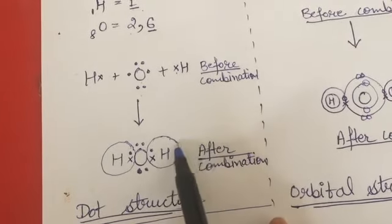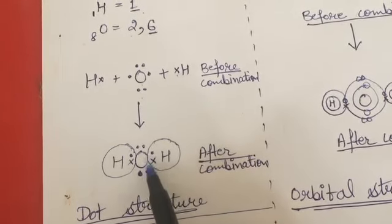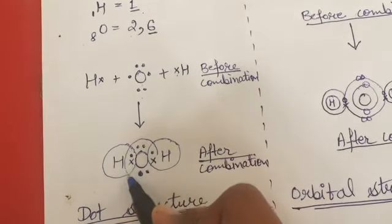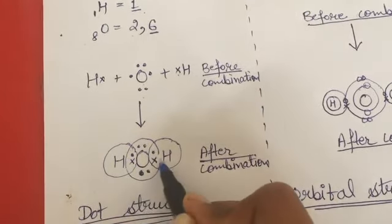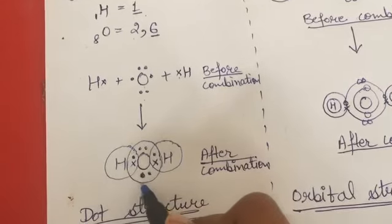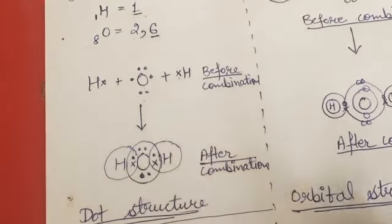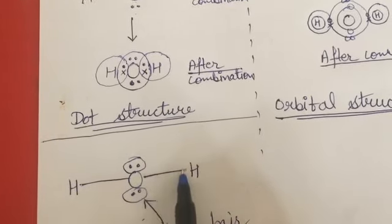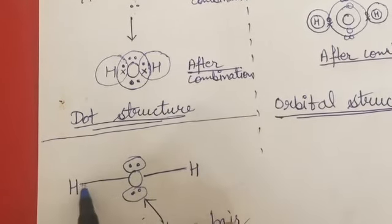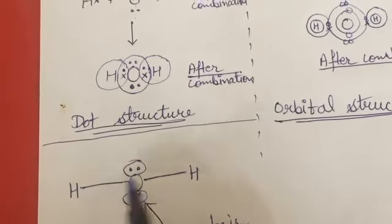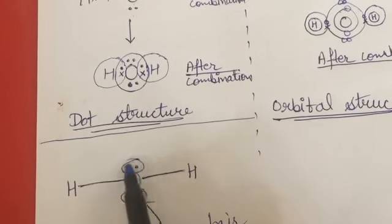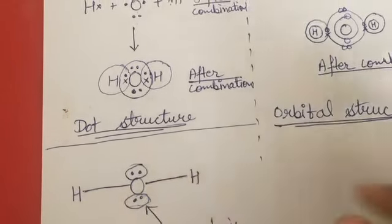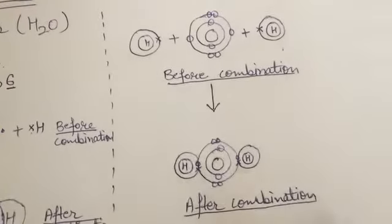Hydrogen's duplet is completed and oxygen's octet is completed, so they are both now stable by sharing of electrons. In this structure, the single bond is shown with a line — these two are single bonds, and this one is the lone pair, which is not shared with any of the atoms. Here is the orbital structure of the covalent bond.